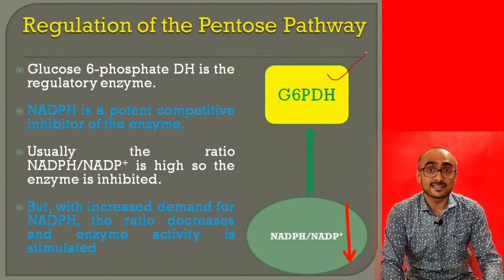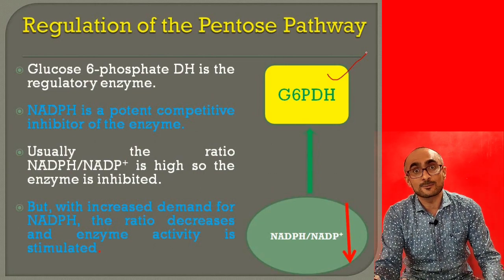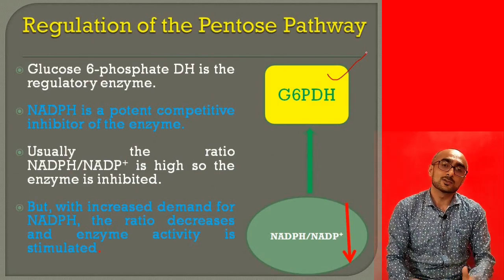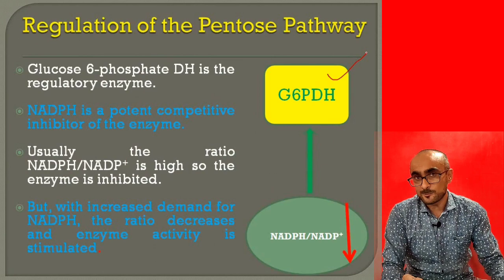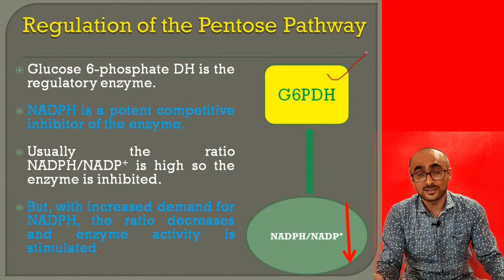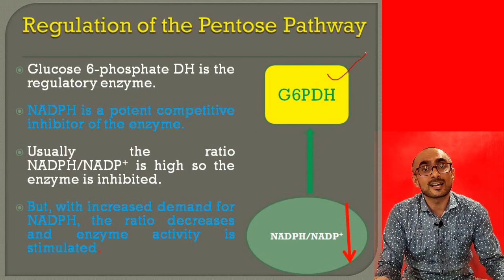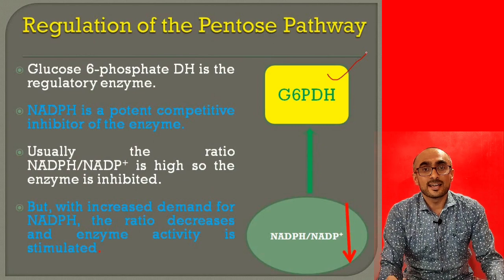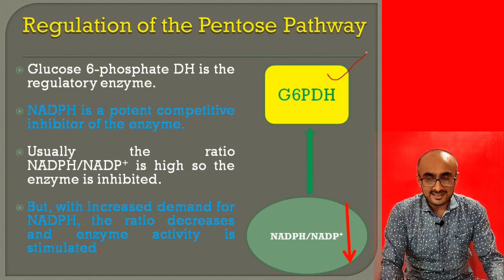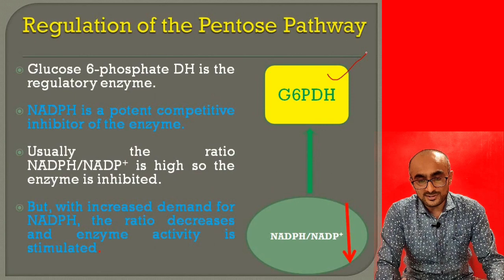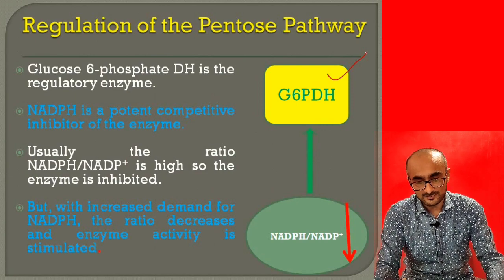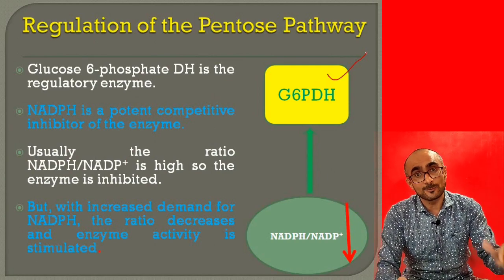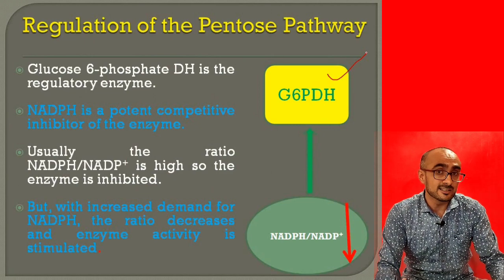Because it is competitive inhibition, NADPH binds to the same site where NADP+ binds. Whichever of NADP+ or NADPH is in higher concentration will bind the enzyme. When NADP+ is high — meaning NADPH is low — the reaction proceeds and is activated. If NADPH is high, it binds at the NADP+ binding site and inhibits the reaction from proceeding. So it is actually the ratio of NADPH to NADP+ that determines enzyme activity.